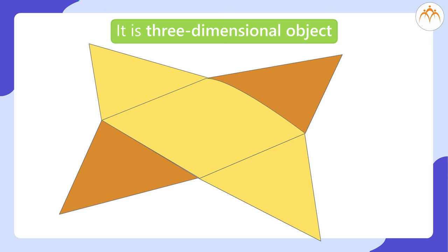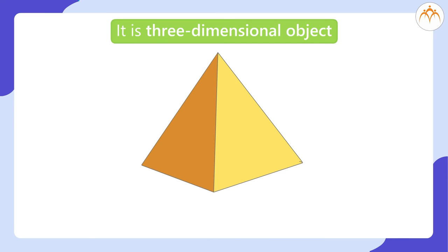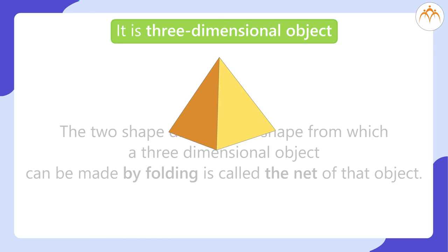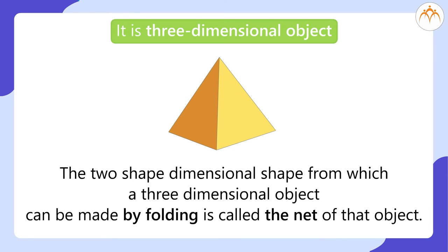Surprisingly, we can make a three-dimensional pyramid from two-dimensional card sheet by folding and pasting along edges properly. The two-dimensional shape from which a three-dimensional object can be made by folding is called the net of that object.